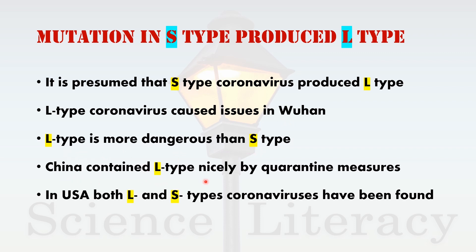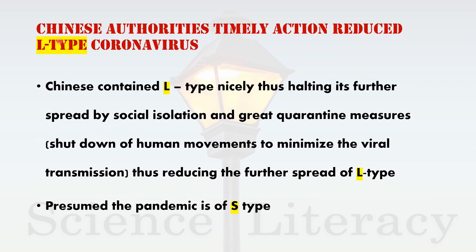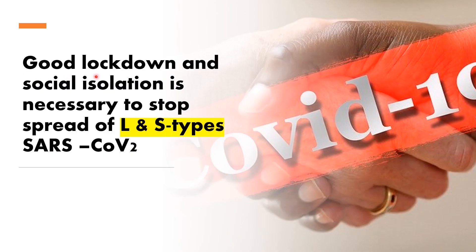China contained the L type effectively through quarantine measures. In the USA, both L and S type coronaviruses have been found. Chinese authorities' timely action reduced L type coronavirus through social isolation, great quarantine measures, and shutdown of human movements to minimize viral transmission, thus reducing the further spread of L type. It is presumed that the pandemic is predominantly of S type. Good lockdown and social isolation is necessary to stop the spread of both L and S type SARS coronavirus 2 across the globe.